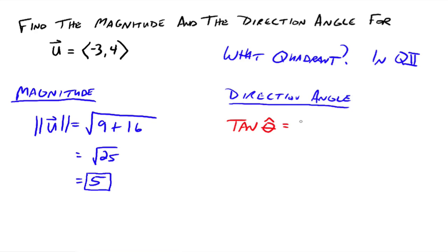Positive four over positive three. That's going to give me an angle that is in quadrant one. This implies that theta hat is about equal to 53.1301 degrees. But that's the reference angle.